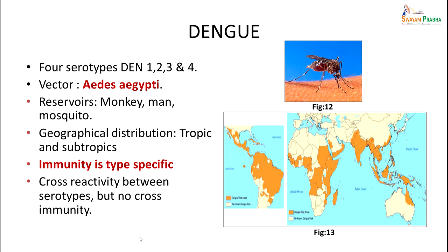Dengue is produced by four serotypes: dengue 1, 2, 3, and 4. The vector is Aedes aegypti; reservoirs include monkey, man, and mosquito. Geographical distribution is tropical and subtropical areas. Immunity is type-specific — if you get infection with type 1, you will have immunity against type 1. Cross-reactivity can occur between serotypes, but there is no cross-immunity.